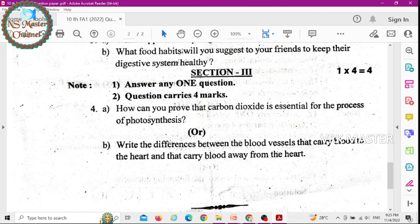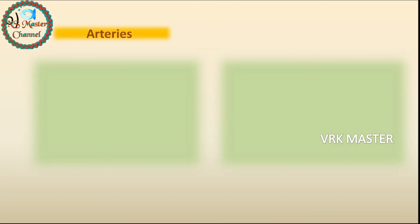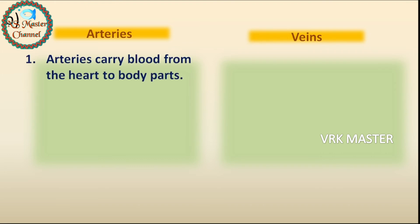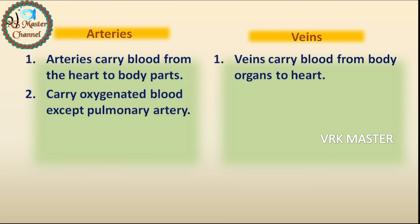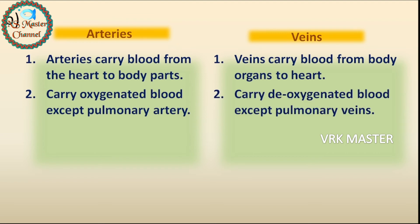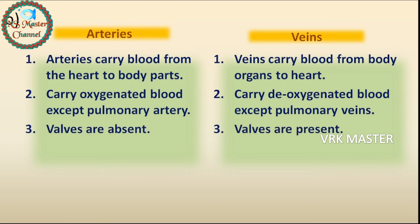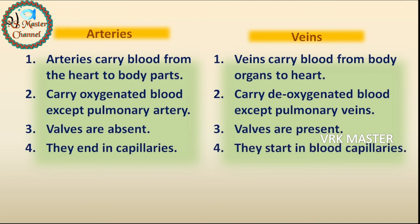Question (b): Write the differences between blood vessels that carry blood to the heart and those that carry blood away from the heart. Answer — Arteries vs Veins: Arteries carry blood from the heart to body parts; veins carry blood from body organs to the heart. Arteries carry oxygenated blood except the pulmonary artery; veins carry deoxygenated blood except the pulmonary veins. Valves are absent in arteries; valves are present in veins. Arteries end in capillaries; veins start in blood capillaries. Arteries move away from the heart; veins move towards the heart.